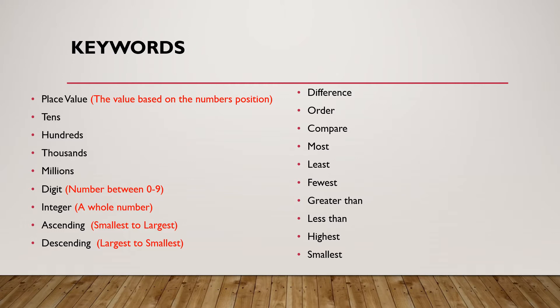In our exams, it's not going to say place these numbers smallest to largest. It's going to say place these numbers in ascending order. So 1, 2, 3 is ascending. 3, 2, 1 is descending. So there's some of the words there and they're words we're going to be looking at as we go through.